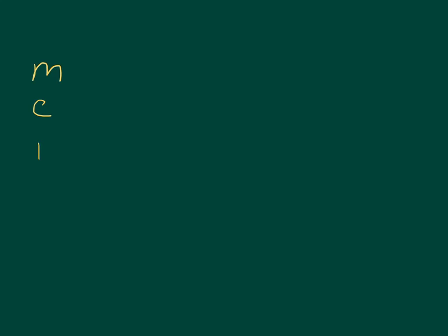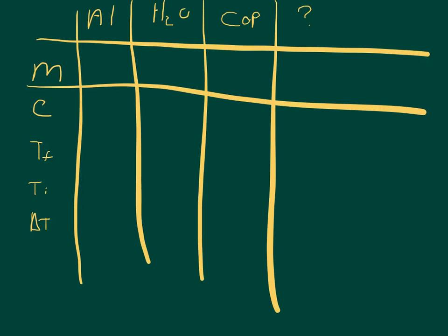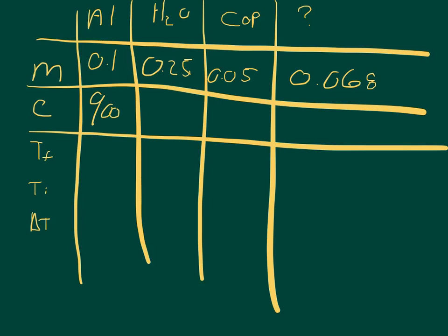Just like in the last video, I can set up a table with columns for mass, specific heat capacity, final temperature, initial temperature, and delta T. The columns are aluminum, water, copper, and the unknown. For mass, converting to kilograms: 0.1, 0.25, 0.05, and 0.068. For specific heat capacity: 900 joules per kilogram Celsius for aluminum, 4,186 joules per kilogram Celsius for water, and 387 joules per kilogram Celsius for copper. The unknown's specific heat is what we're solving for.